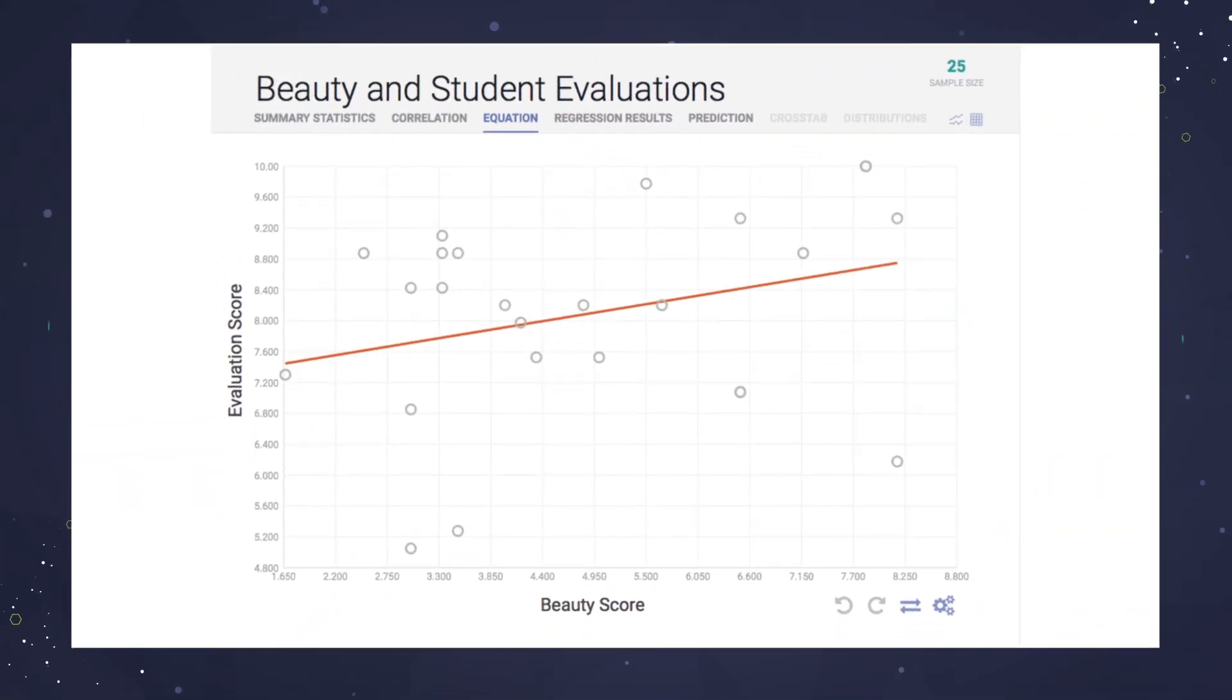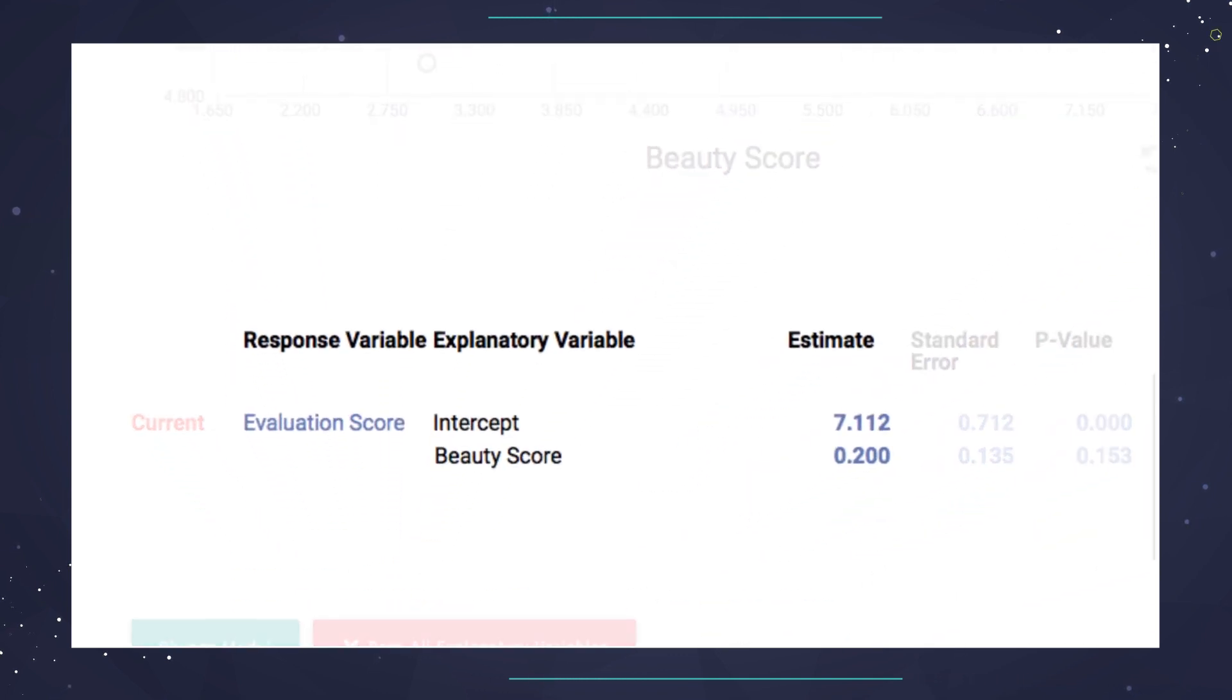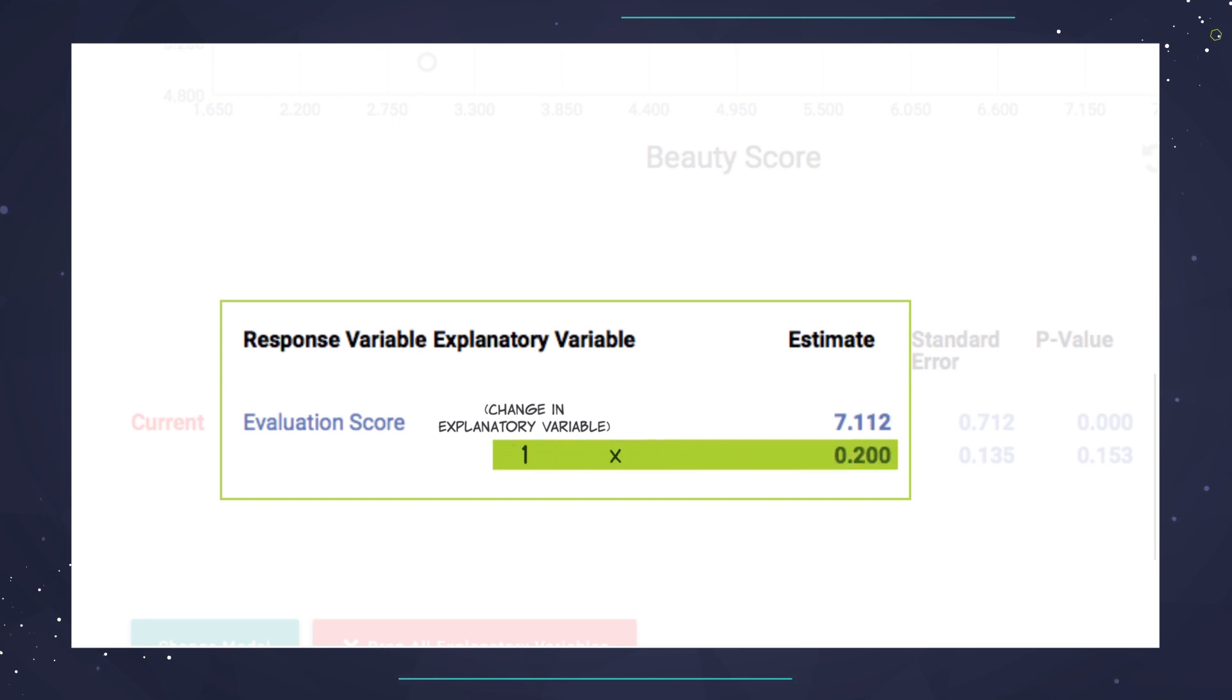For example, what happens if a professor moves from a 2 to a 3 in her beauty score? By how much will her evaluation improve? We can read the predicted change right off the estimated formula. She has moved one point on the beauty scale, so it is simply the value of the slope, 0.2.